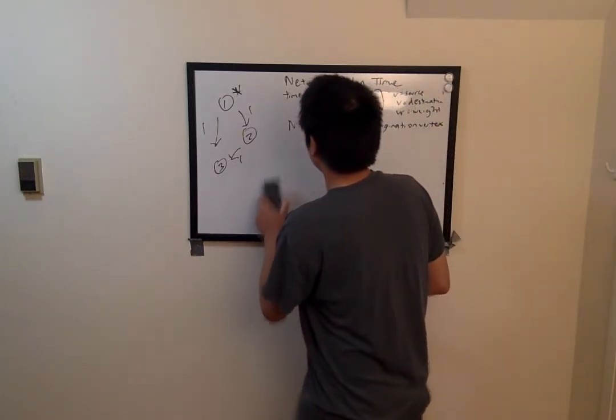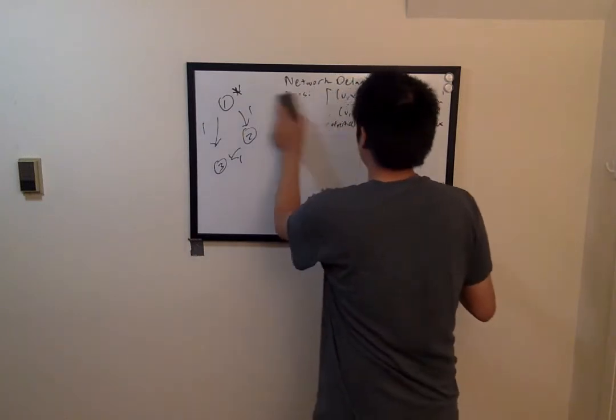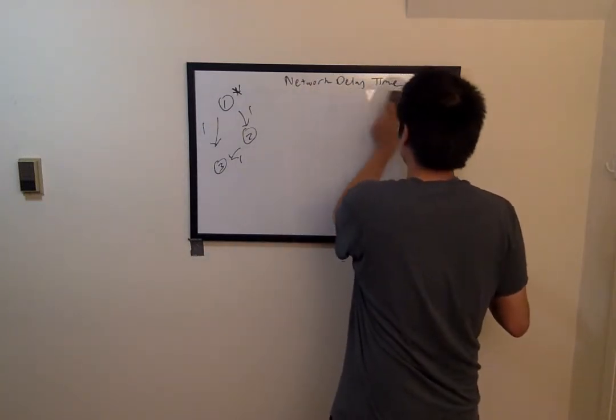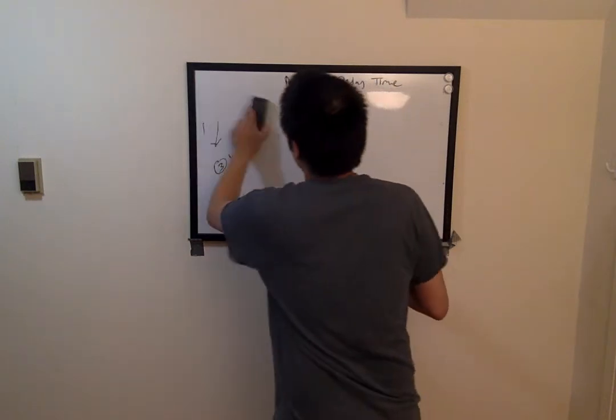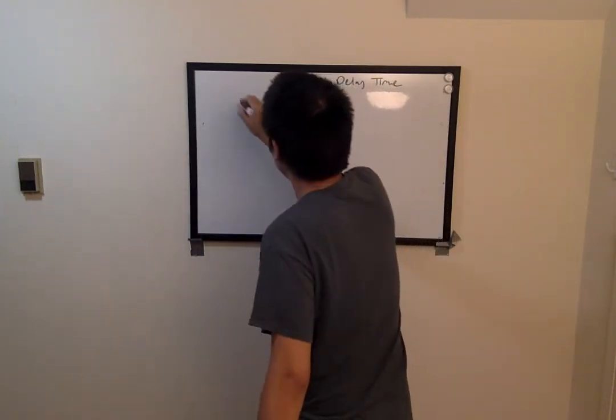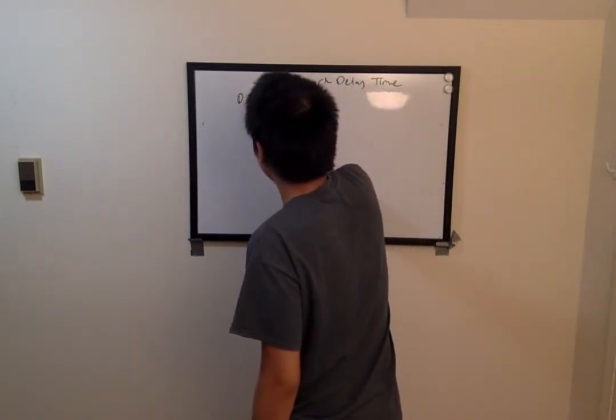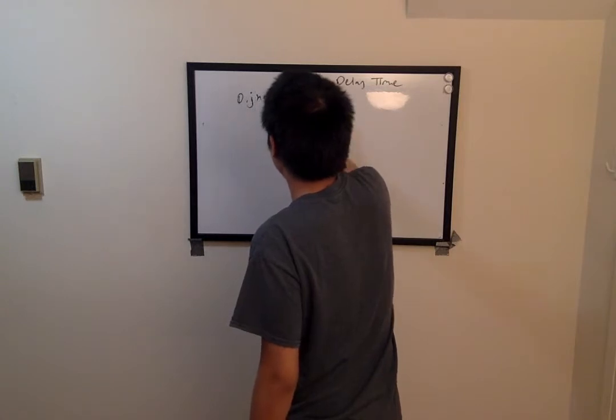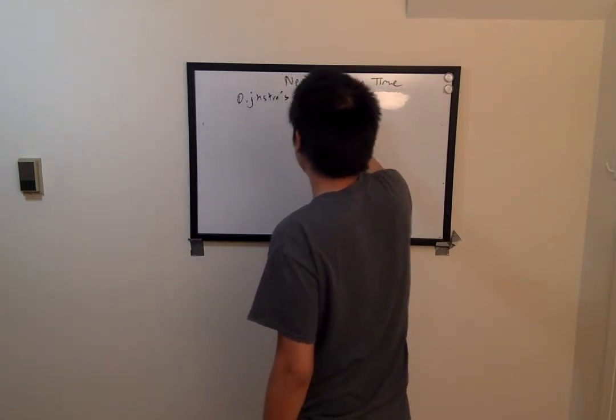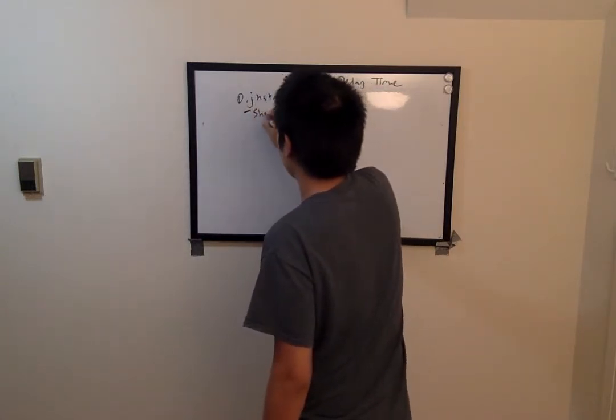which I'll just write some pseudocode up here for. So Dijkstra's algorithm is a shortest path algorithm.